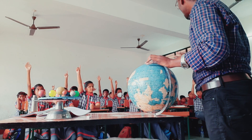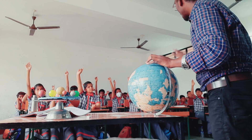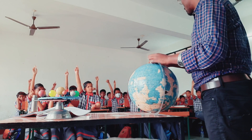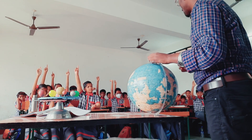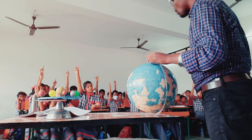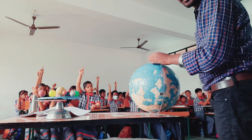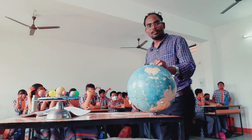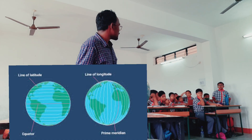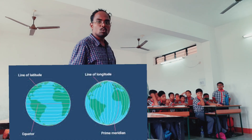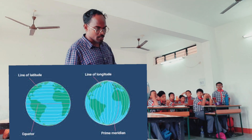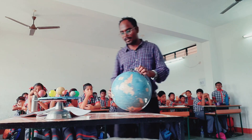Children, remember, just raise your hand, otherwise it will not be audible. Some people want to say. Sir, longitudes and latitudes. There are two types of lines — they are longitudes and latitudes.